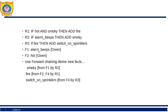Two facts are given: alarm beeps, and it is hot. We start forward chaining from these facts. The fact alarm beeps matches the pattern in Rule 2, so we apply Rule 2 and generate a new fact: smoky.